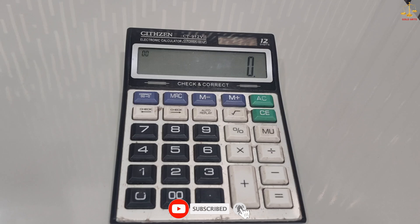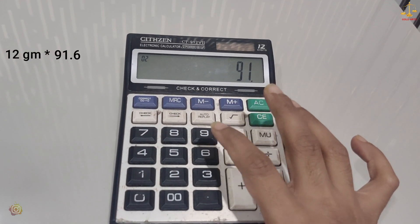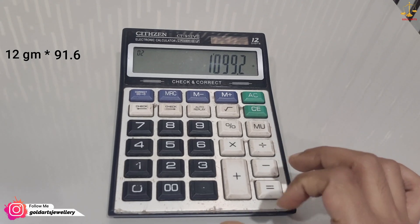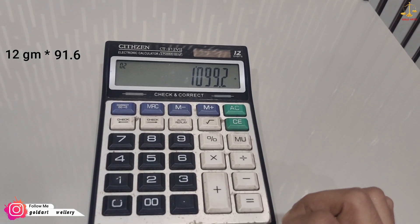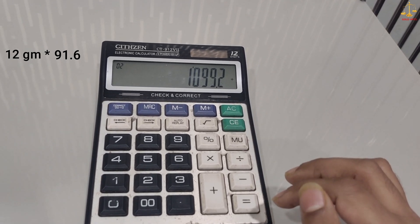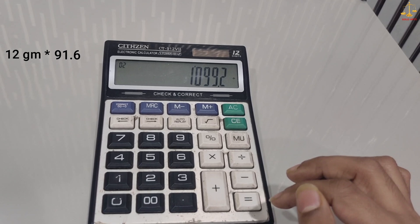12 grams multiplied by 91.6, divided by 99.5 or 99.9999 - it will depend on the purity of gold coin which you have. Let's assume we have 99.5% purity of gold coin, so in that case, divided by 99.5.